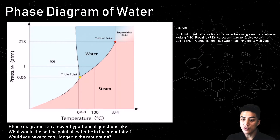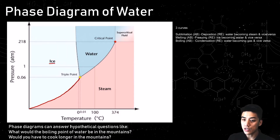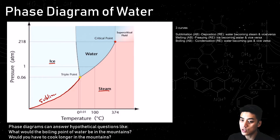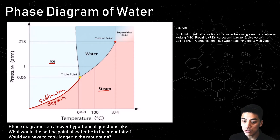Reading a phase diagram of water can answer hypothetical questions like what would the boiling point of water be in the mountains, or would you have to cook longer in the mountains. There are three curves to look out for. The first one drawn in red represents the sublimation or deposition line. Subliming means the solid form becomes a gaseous state — it skips over the liquid state. So ice becoming steam would be sublimation, and this requires the absorption of energy. Deposition is the reverse process: steam becoming ice.